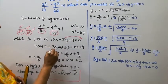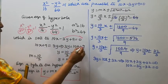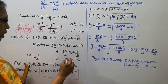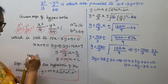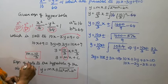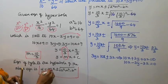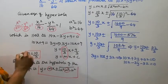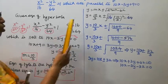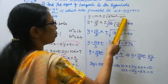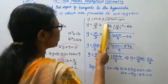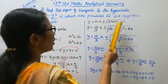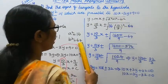From 10x minus 3y plus 9 equal to 0, we get y equal to 10 by 3 x plus 3. So the slope m equals 10 by 3. Substituting the m value into the equation of tangents: y equal to mx plus or minus root of a²m² minus b².